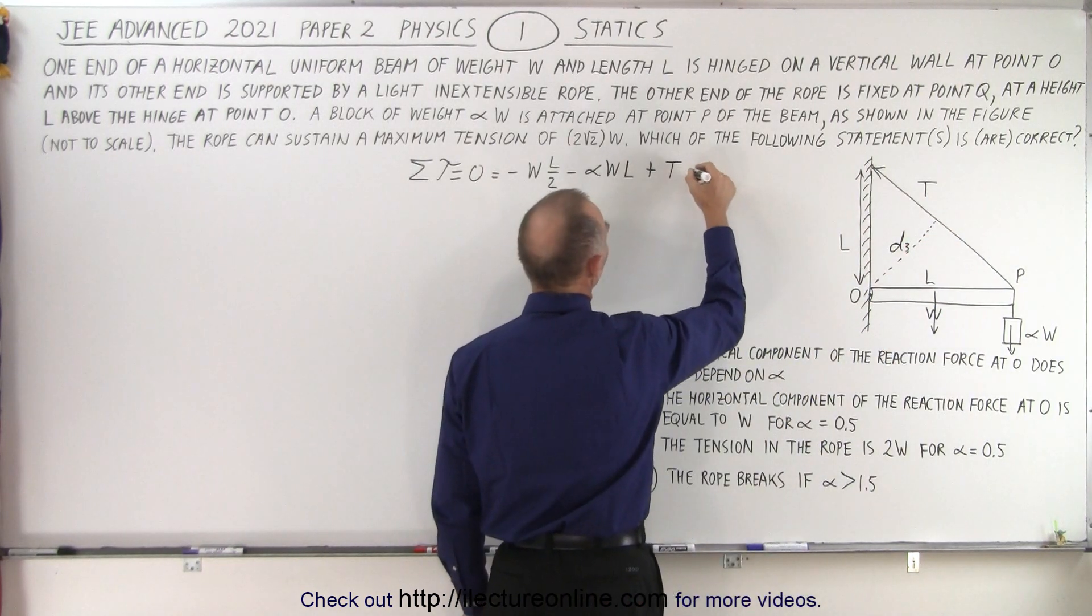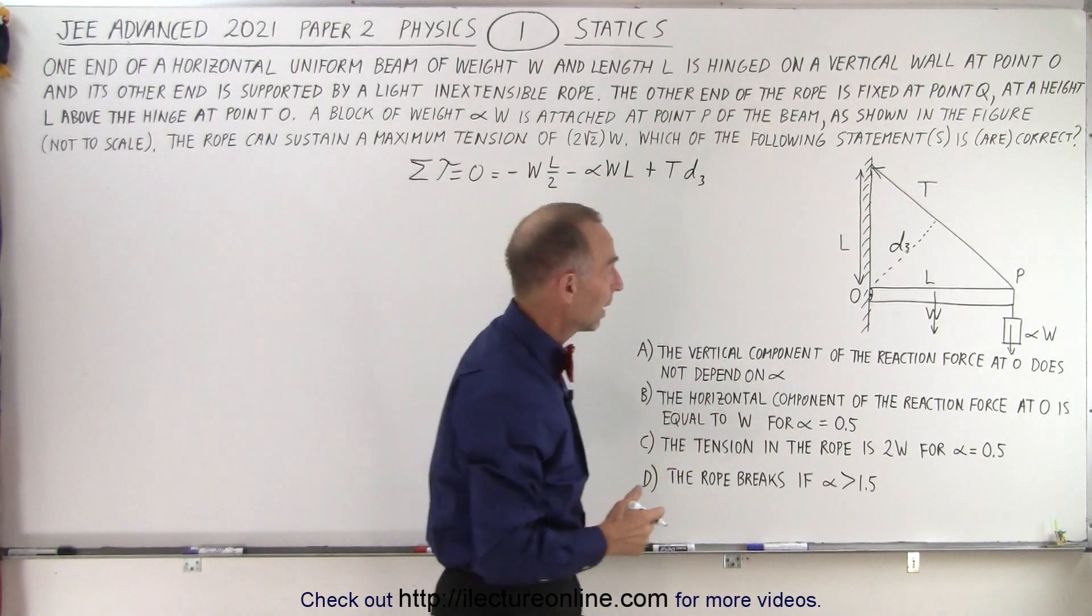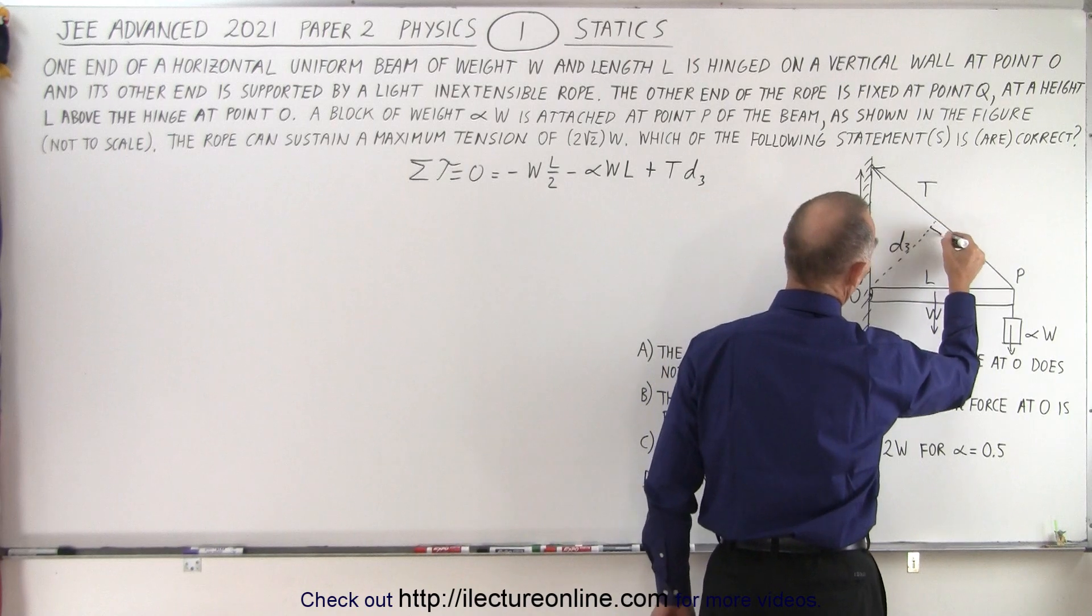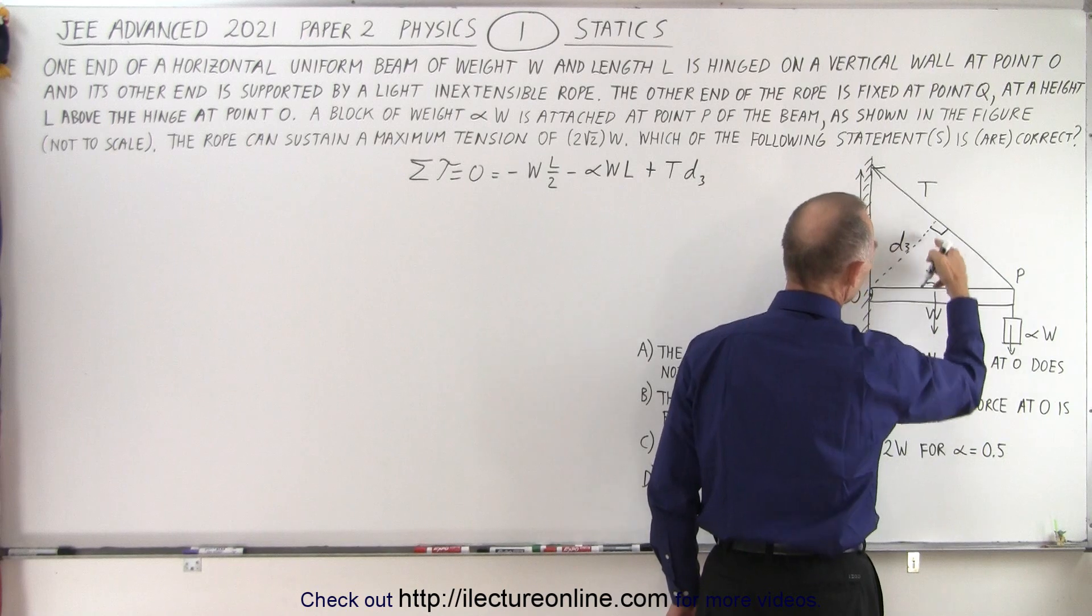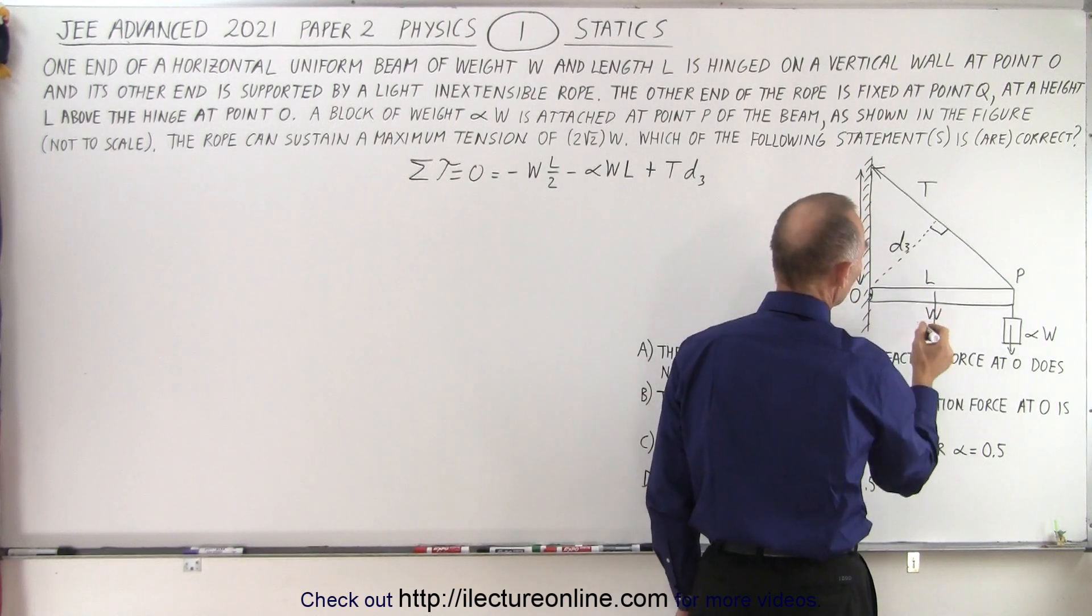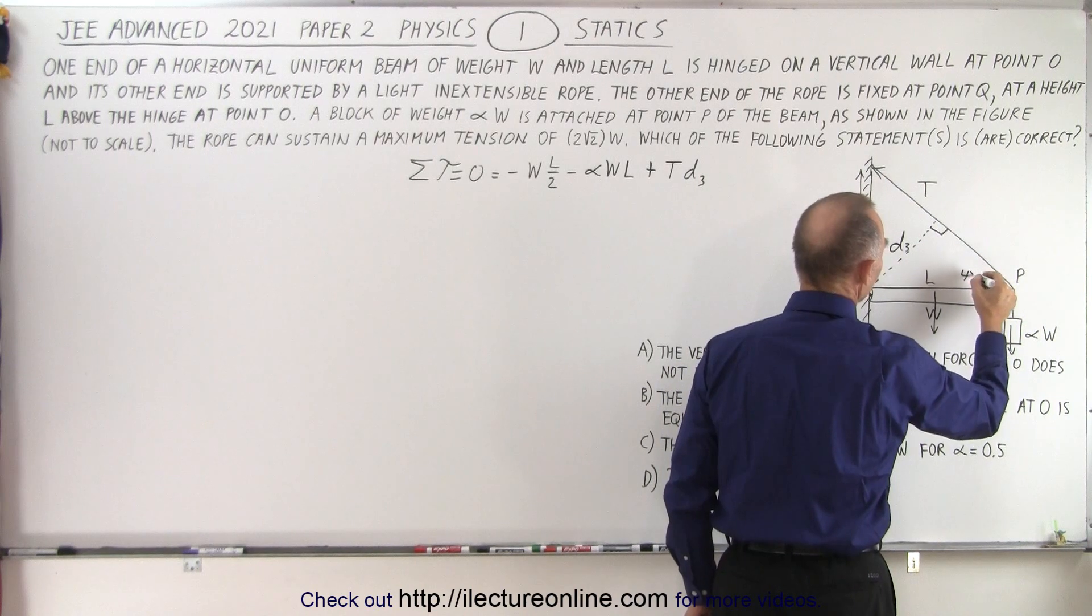One way to look at it is this way. If we draw a line this way, then this becomes what we call the distance D3 for the third force, the tension, so it would be plus the tension times D3. Now, the question is, what is D3? And if you take a look at this right triangle right here, we see the opposite side to the right angle is the hypotenuse L.